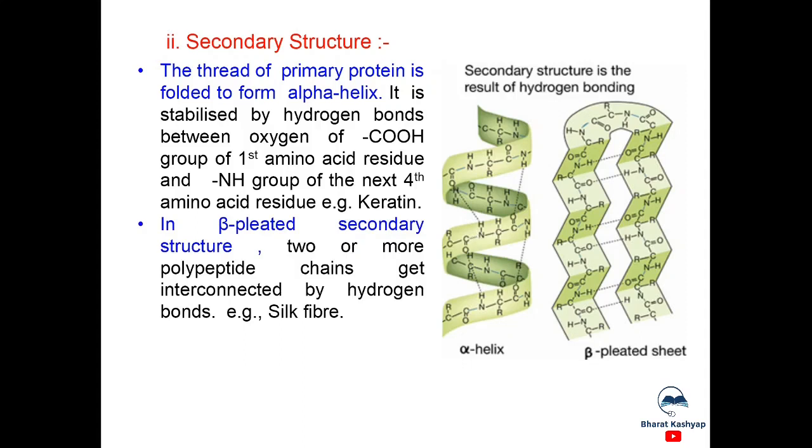Now, in beta-plated secondary structure, two or more polypeptide chains get connected by hydrogen bonds, for example, silk fiber. In proteins, only right-handed helices are observed. This is the right-handed helix here and in beta-plated sheet, you can clearly see more than one polypeptide chain and hydrogen bonds join these chains, so a pleated sheet is formed.